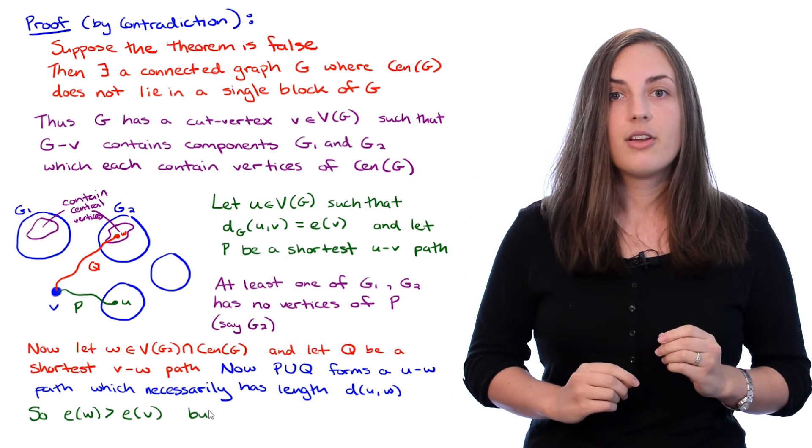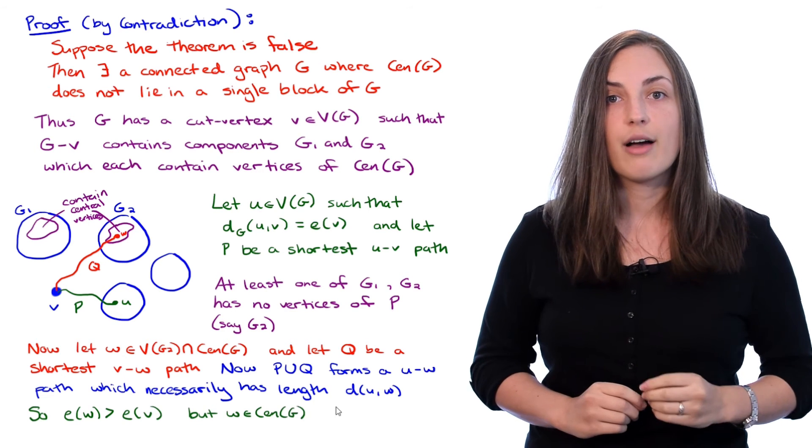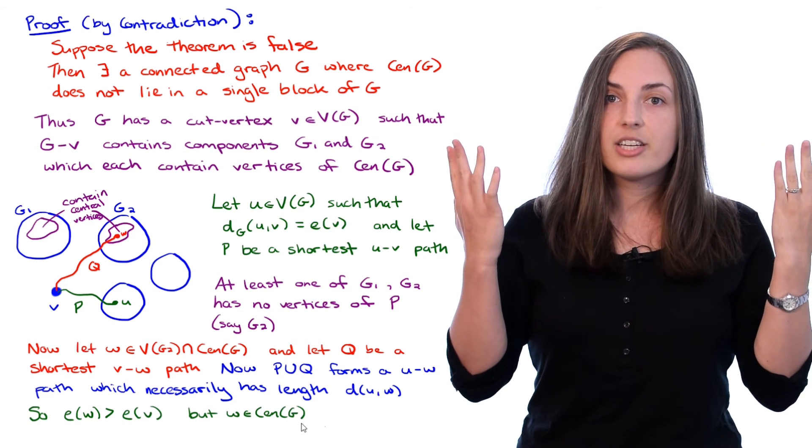But hold on a minute. The eccentricity of W has to be minimum among the whole graph because it belongs to the center. That's a contradiction.